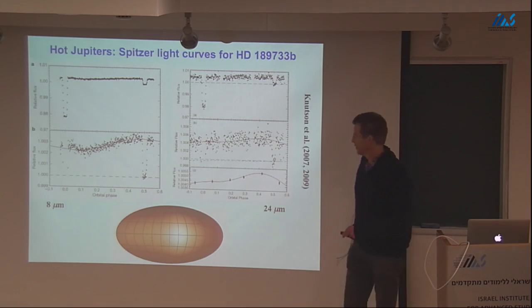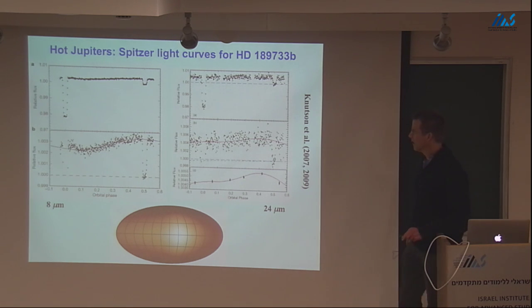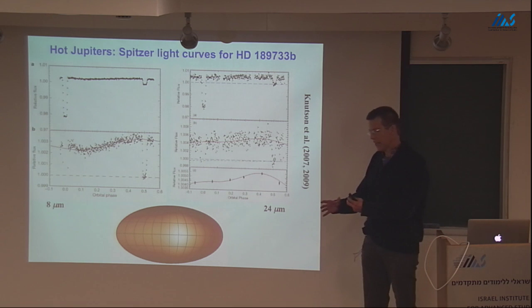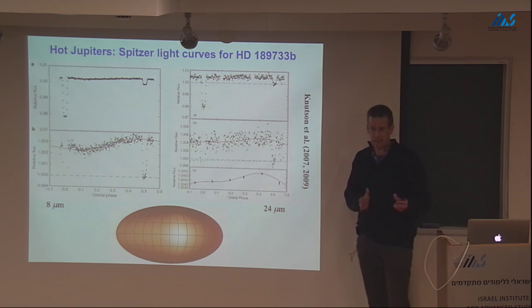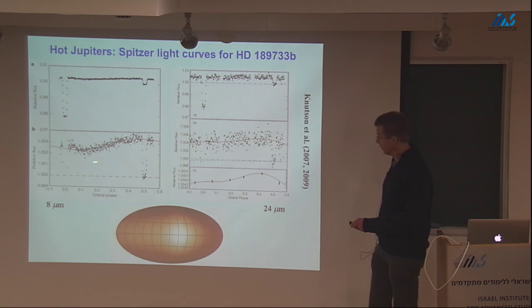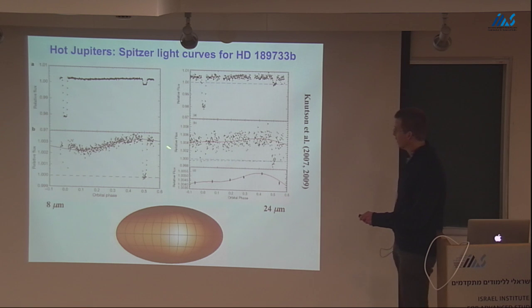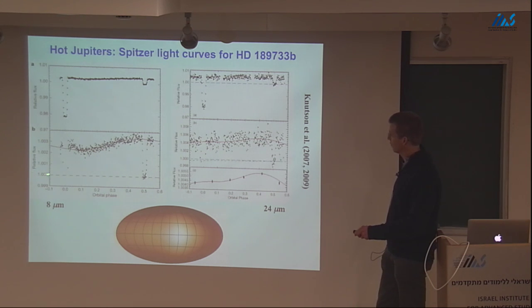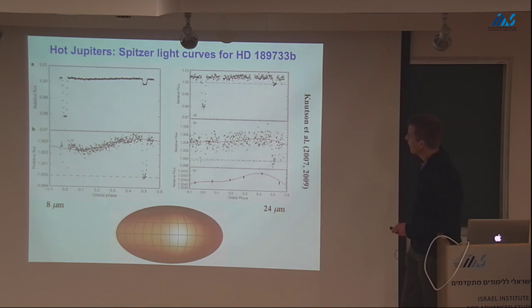A half orbit later we see the secondary eclipse, where the planet passes behind its star. If the planet were not radiating, you would not see this event. The amplitude of this step tells you you're detecting actual photons from the planet. The transiting geometry provides a way of disentangling which component is the star and which is the planet using the time domain, even though we can't spatially resolve the two in images.